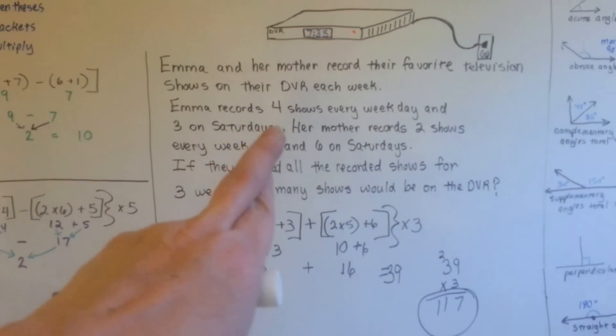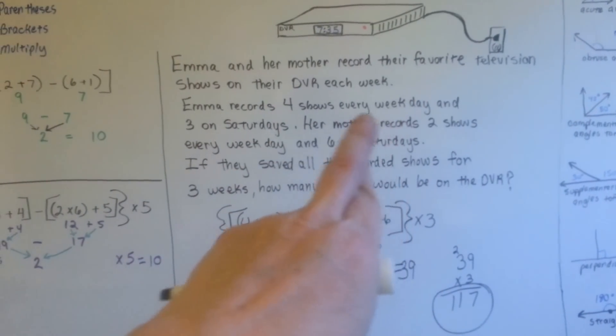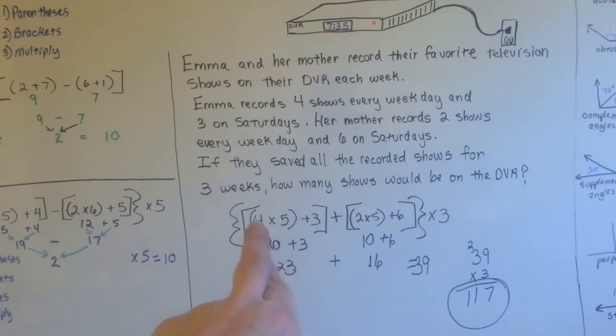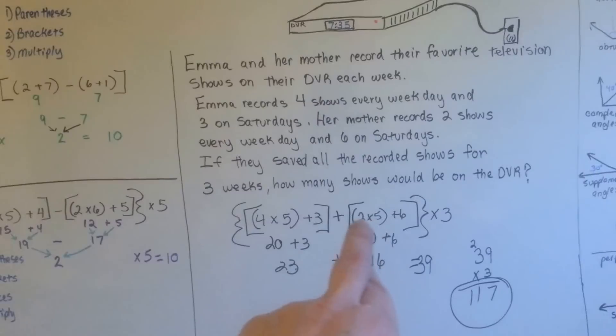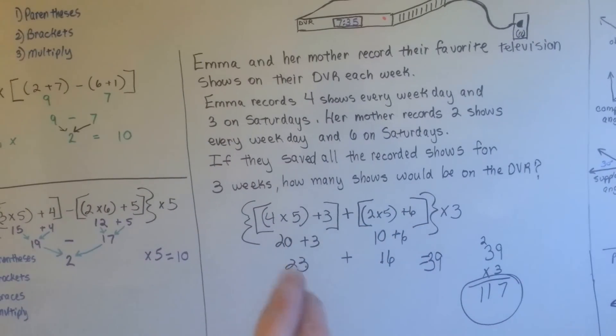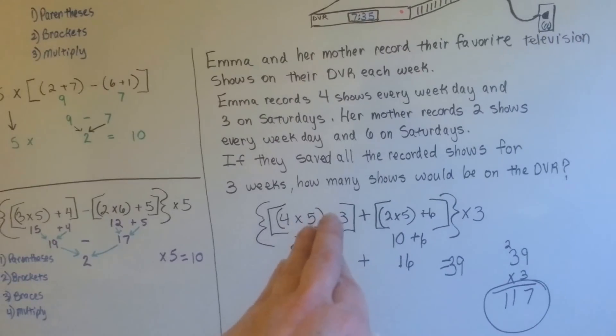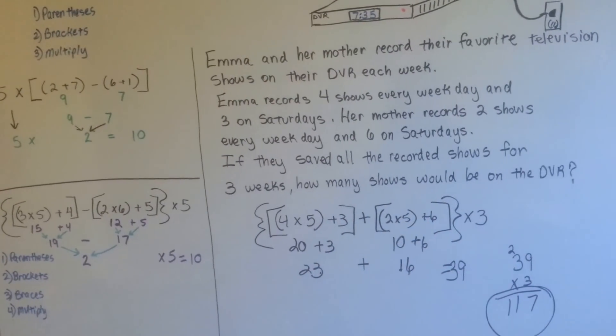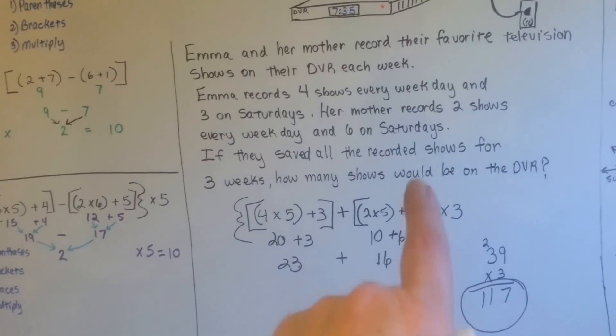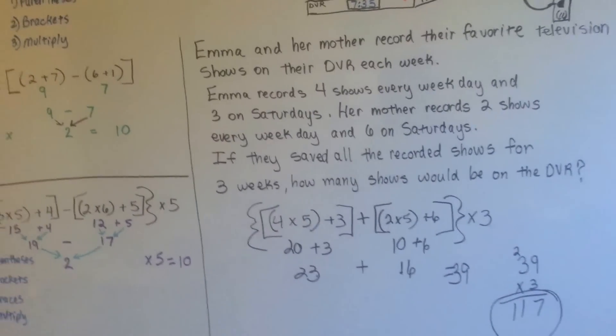Do you see how I did that? I took Emma's little information, and the fact that it was weekdays, so I knew it had to be 5 weekdays. And then her mom was 2 shows on the weekdays, so that was 2 times 5, and her 6 on the Saturdays, and Emma's 3 on the Saturdays. And then we had to split them up so we didn't get them confused. We wanted to keep Emma's information separate from her mother's information until we had it all figured out. That's where the brackets and the parentheses came in handy. And then we figure it all out, we add it all up, then we do our multiplication, and we have our answer.